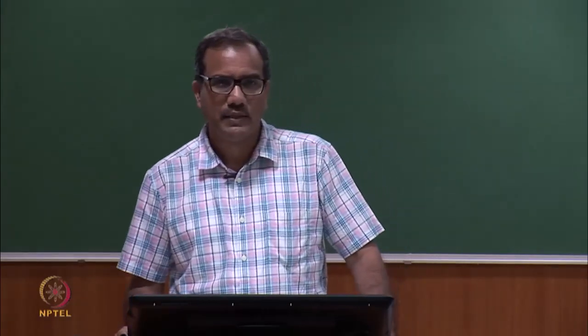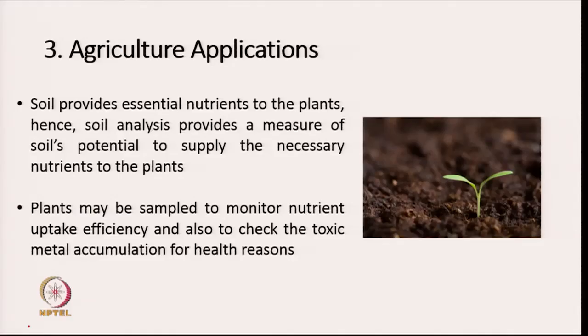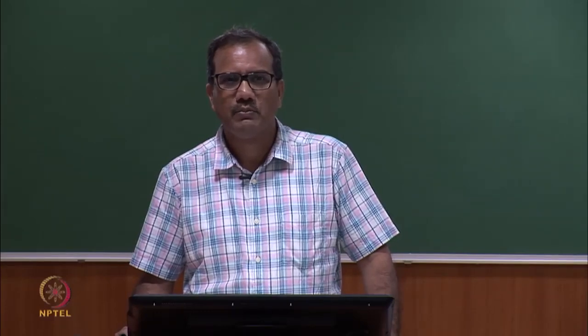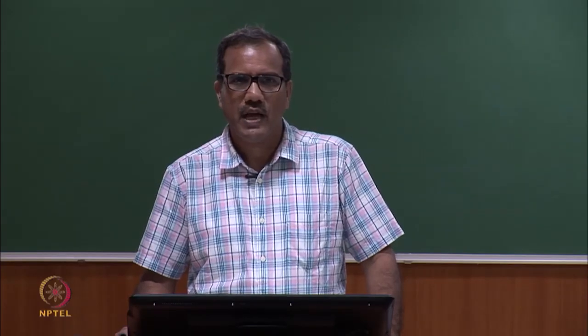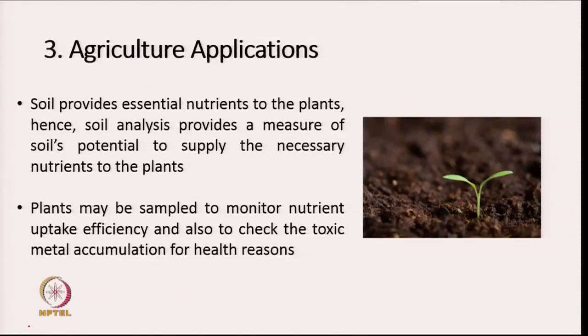Atomic spectroscopy is quite often used in agriculture. As we know, soil provides essential nutrients to the plants, and hence soil analysis provides a measure of soil's potential to supply the necessary nutrients to the plants. It is also well known that different kinds of plants require different kinds of essential nutrients. So if you analyze soil, you will be able to tell which kind of crop is suitable to a particular kind of soil. Plants can also be sampled to monitor nutrient uptake efficiency and to check toxic metal accumulation for health reasons.